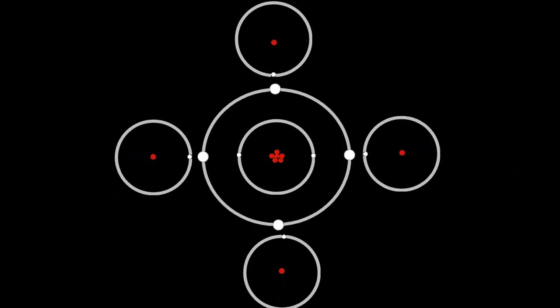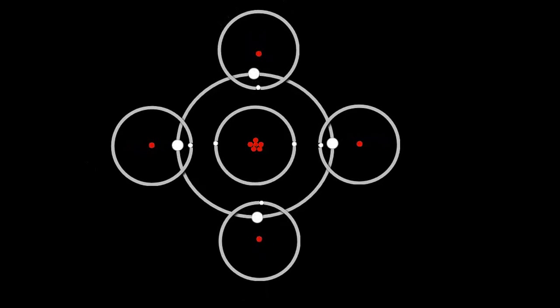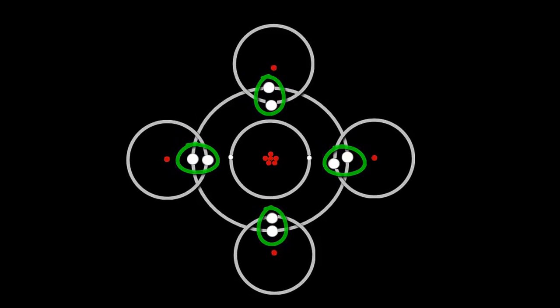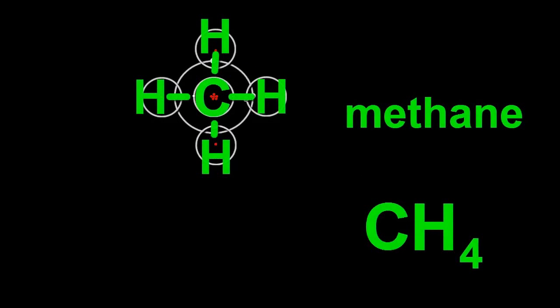When we bring four hydrogen atoms onto the stage, you can see that they can all overlap with carbon to provide all the electrons that carbon needs. There are now eight electrons in carbon's outer shell, if we count the shared ones from hydrogen. It makes the molecule methane, CH4, and it's the gas that your kitchen stove uses. It's also called natural gas.